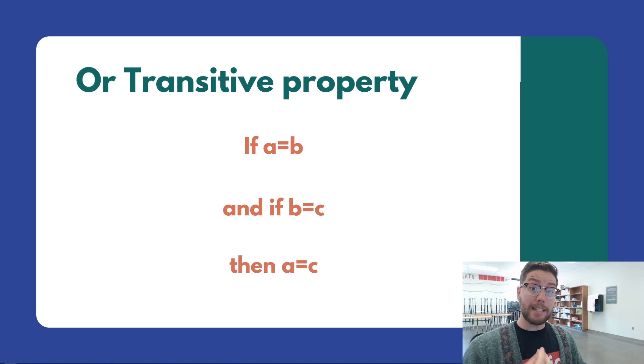So the transitive property: if A is equal to B and B is equal to C, then A is going to be equal to C. This is actually really logical if you think about it, because if A equals B and B equals C, we can cancel out this middleman and just say that A is equal to C.